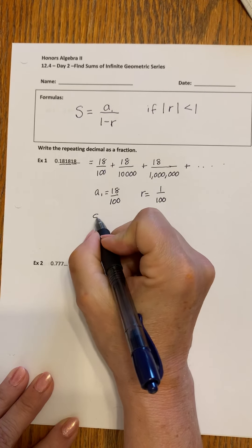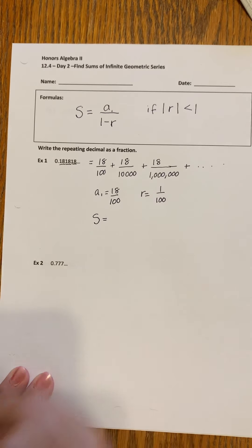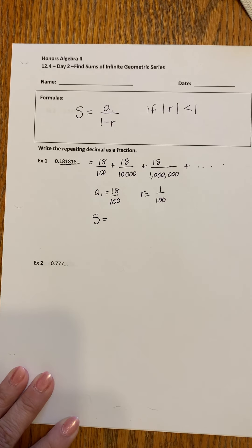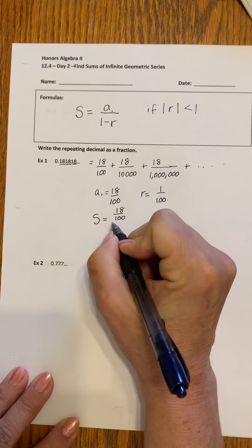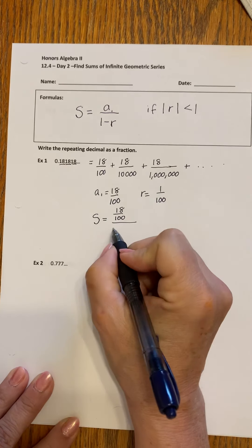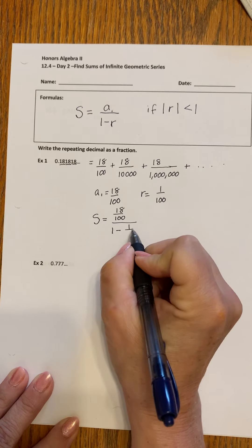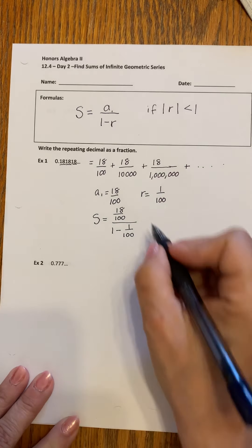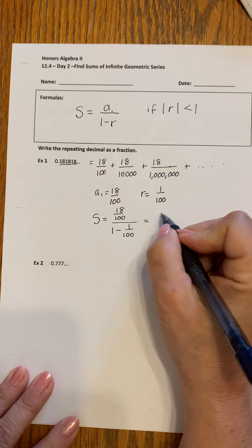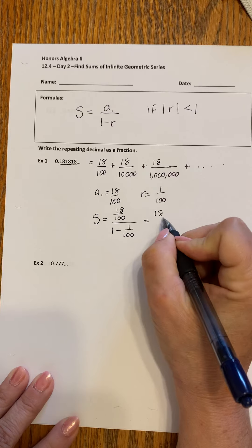So in order to find out what that would be in a fraction form, we're plugging this in. 18 over 100 is a1 divided by 1 minus 1 over 100. You can hear my dog walking. She needs her nails cut. Now she's drinking.